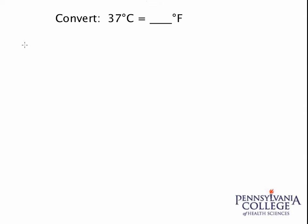In this problem, we are asked to convert 37 degrees Celsius to some amount of temperature in degrees Fahrenheit. In order to solve this problem, we need to use a formula.